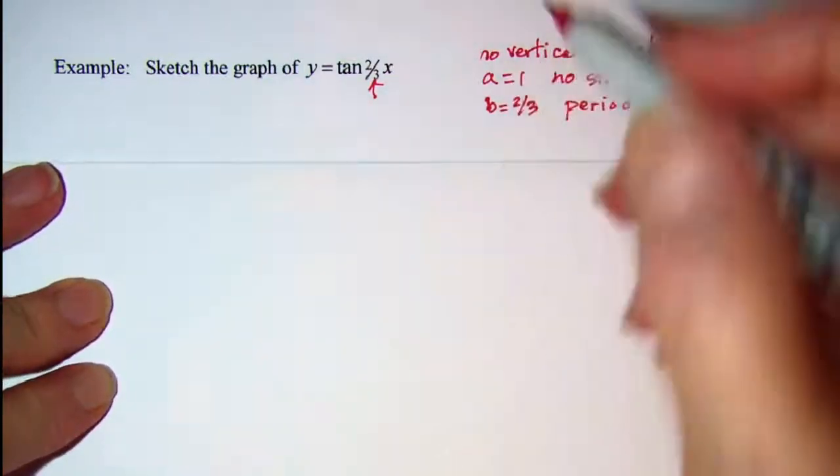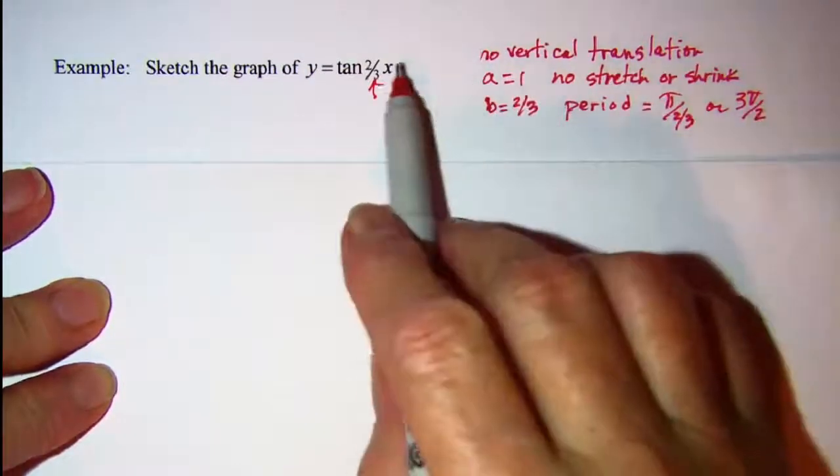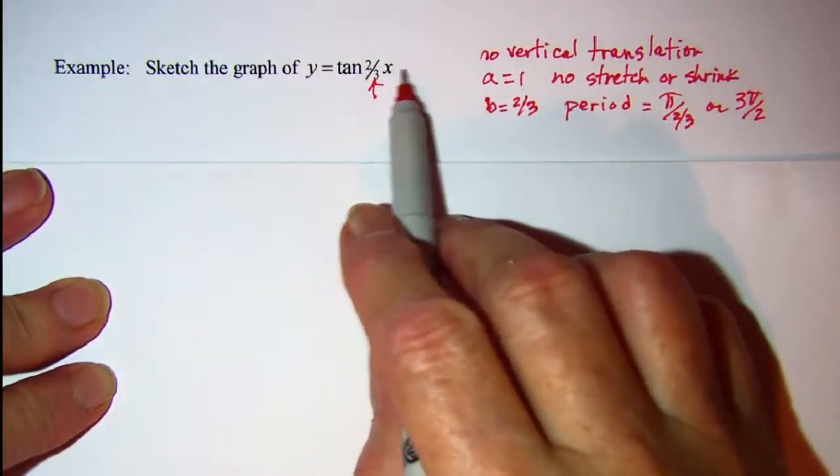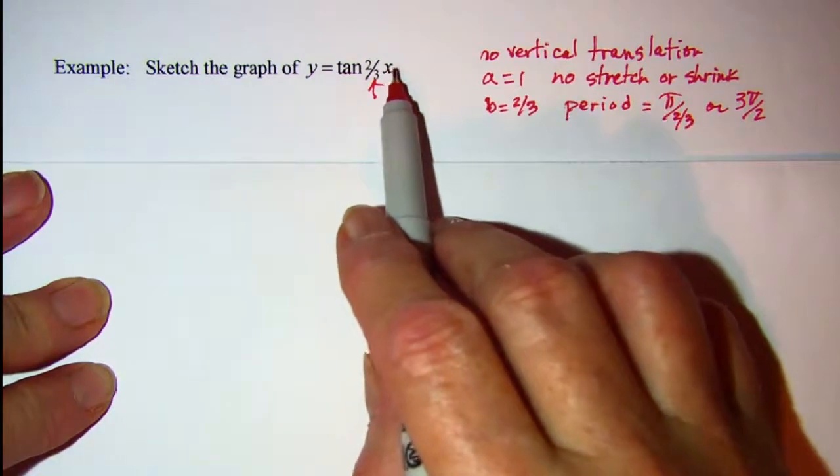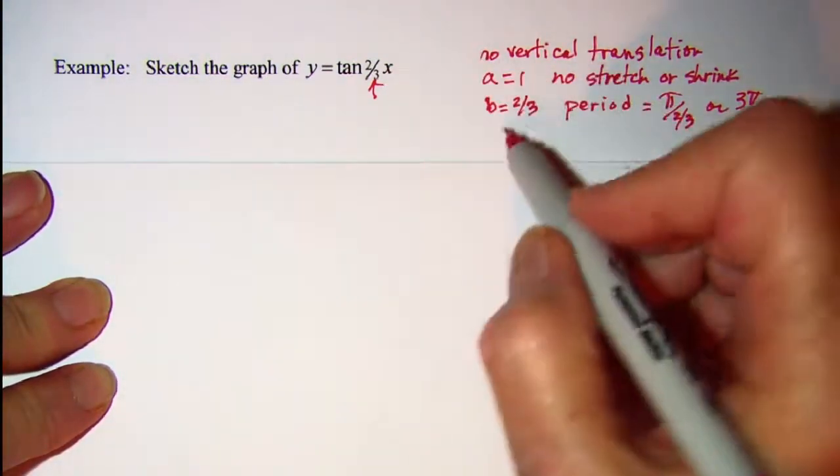And then we don't have the D value, a number added or subtracted onto the x, so there is no phase shift.